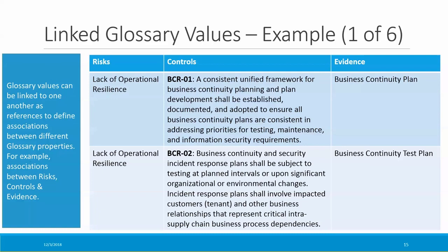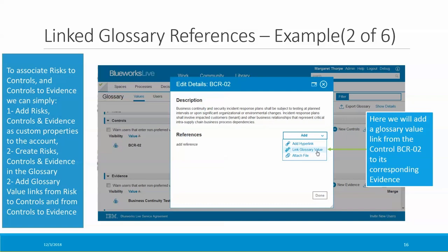I'd like to show you an example of how you might use the new glossary link references. With file attachments and hyperlinks it's fairly obvious, but glossary links allow you to associate glossary values with other glossary values. In this example, I'm using glossary reference links to associate three different custom properties: risks, controls, and evidence. I've got one risk identified — lack of operational resilience — associated with two controls, BCR01 and BCR02. Each of those controls is associated with an item of evidence: BCR01 with a business continuity plan, and BCR02 with a business continuity test plan.